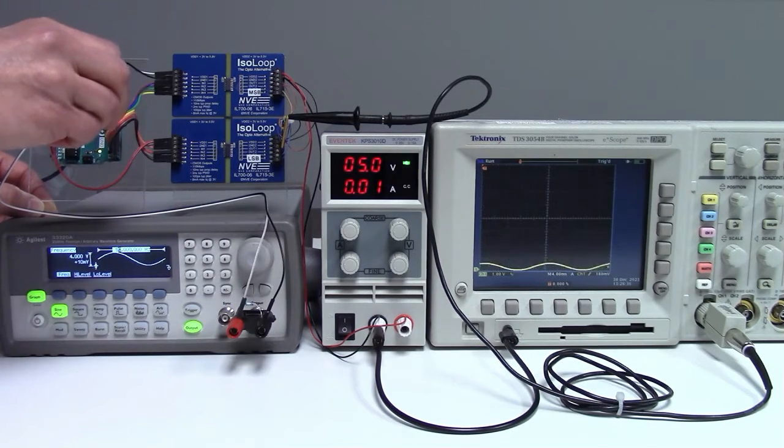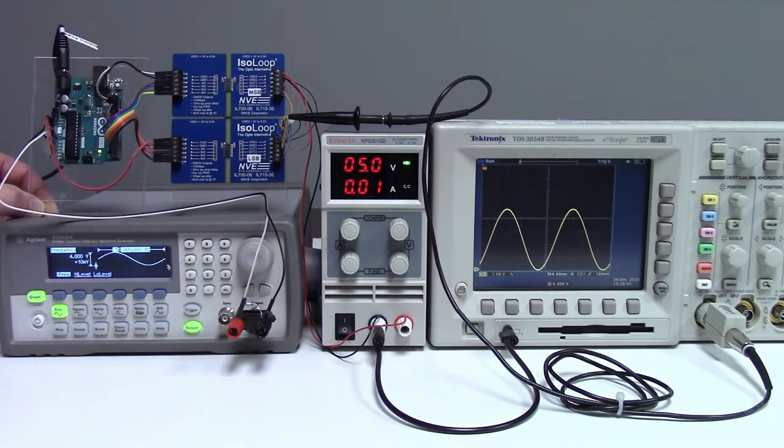Because the microcontroller A to D is 10 bits and the D to A is 8 bits, we can have a gain of 4 without losing resolution. With the input of 50 Hz, the signal fidelity is quite good.